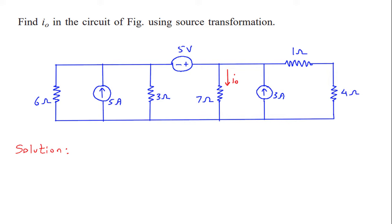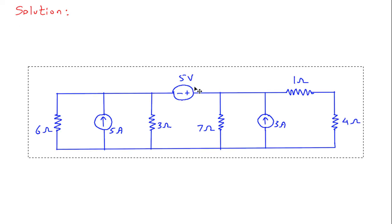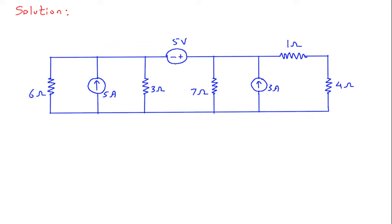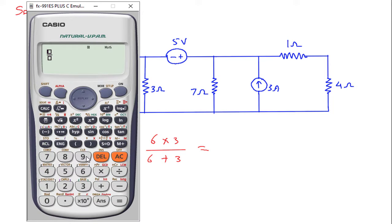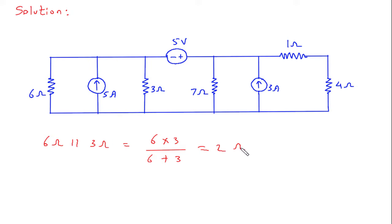First of all we will redraw the circuit. As we can see that this 6 Ohm and 3 Ohm are in parallel. So 6 Ohm parallel with 3 Ohm: this will be 6 into 3 by 6 plus 3, which equals 2 Ohm.